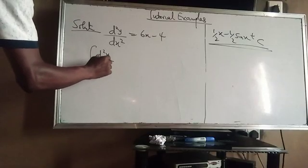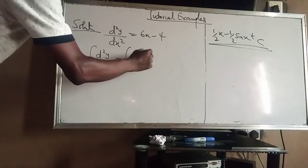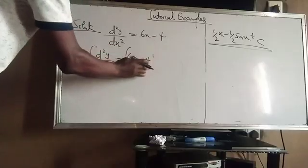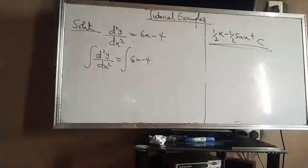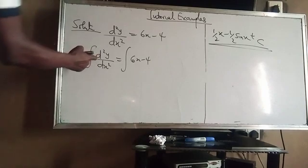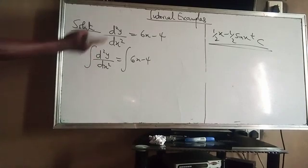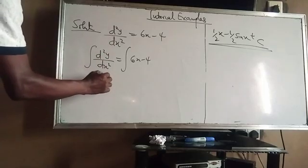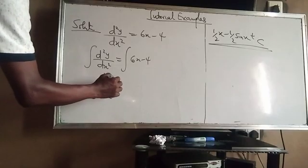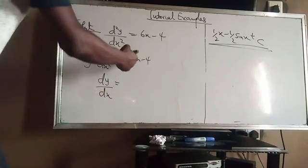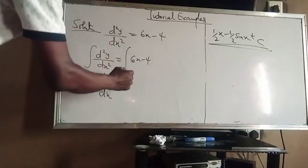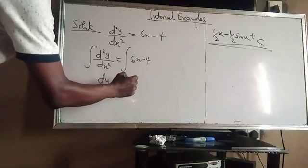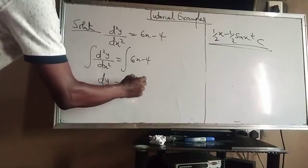By first integrating both sides: the integral of d²y/dx² dx equals the integral of (6x − 4) dx. The integral sign cancels the d, so we have dy/dx on the left side. Now integrating the right side.